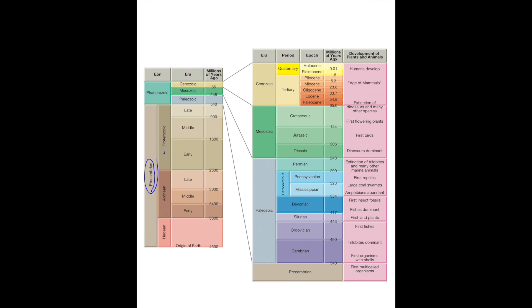The Phanerozoic is broken down into the Cenozoic, the Mesozoic, and the Paleozoic. The Paleozoic is ancient life, the Mesozoic is middle life where the dinosaurs were, and the Cenozoic is recent life — the age of the mammals. Following those outward, we can break these eras up into individual periods. The Cenozoic has two periods: the Quaternary and the Tertiary. The Mesozoic breaks into the Cretaceous, Jurassic, and Triassic. The Paleozoic has the Permian, Carboniferous, Devonian, Silurian, Ordovician, and Cambrian.